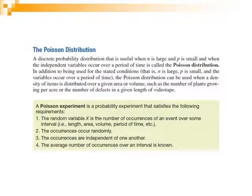Dear students, here we are again for the third video for the Applied Statistics course. We already began in the previous video with discrete distributions and began with the binomial distribution. Now we turn to another discrete distribution, which is the Poisson distribution.